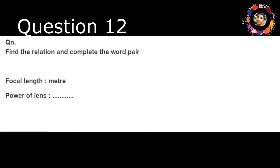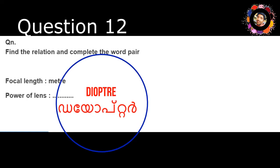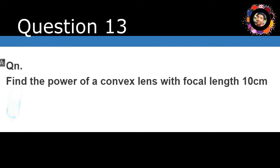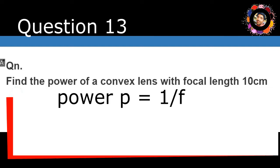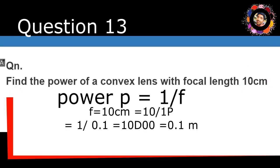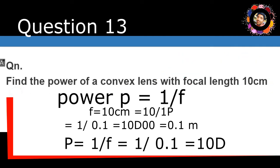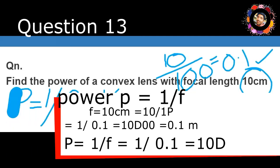Find the relation and complete the word pair: focal length in meters, power of lens in diopters. The power of lens is the diopter. Let's take a look at the formula: P is equal to 1 by F. Focal length is 10 cm. We will convert it in meters: 10 divided by 100 is equal to 0.1 meter. So power is equal to 1 by 0.1, which is equal to 10 diopters.